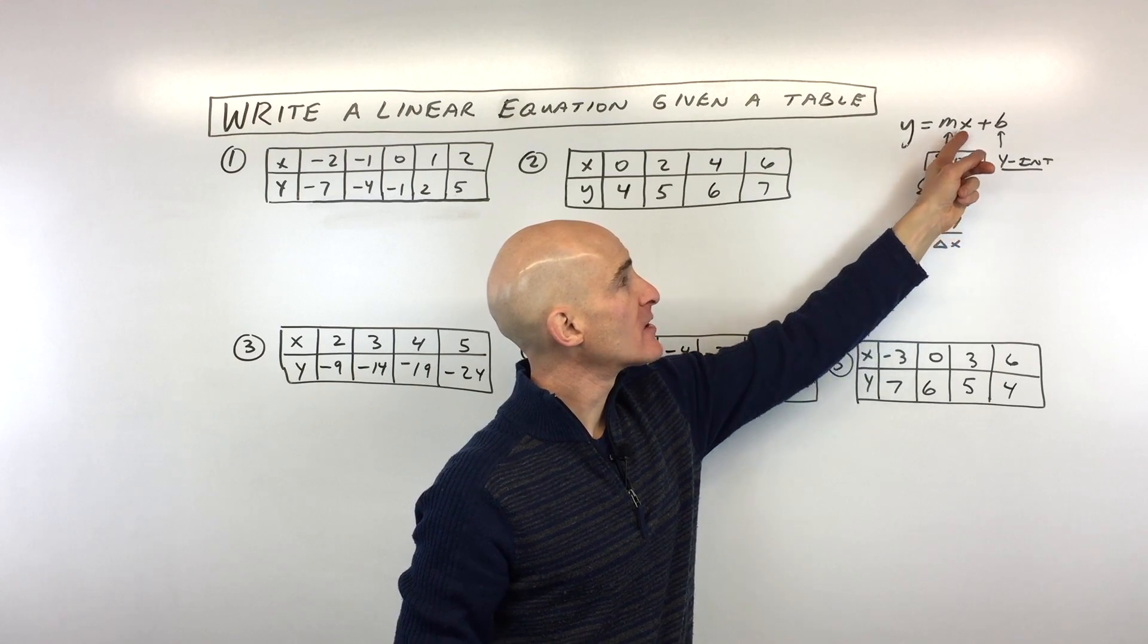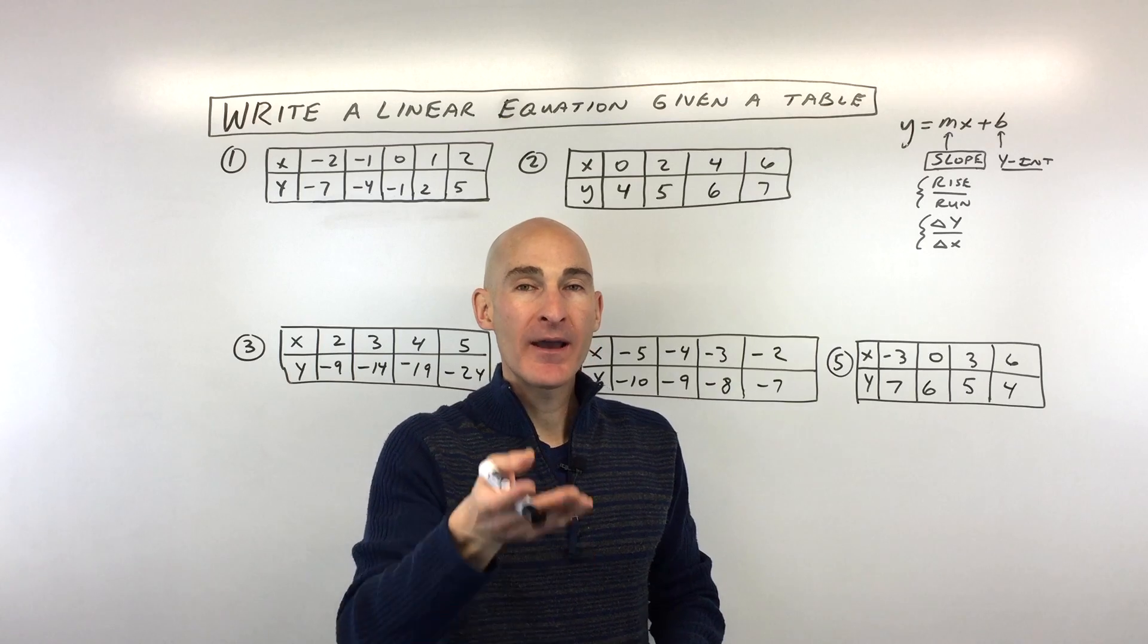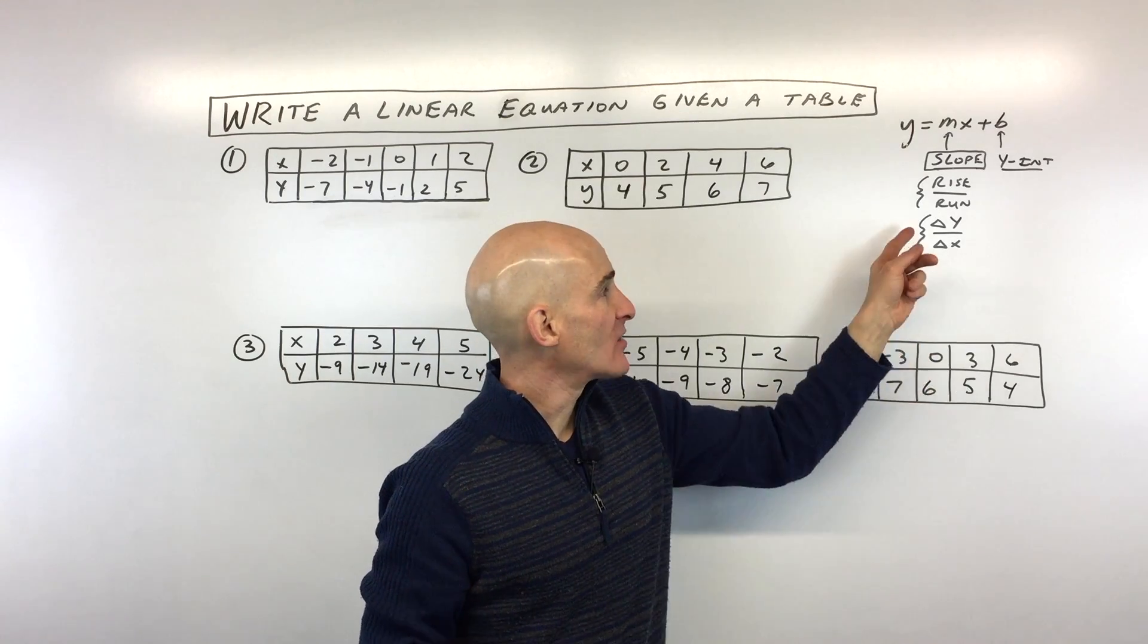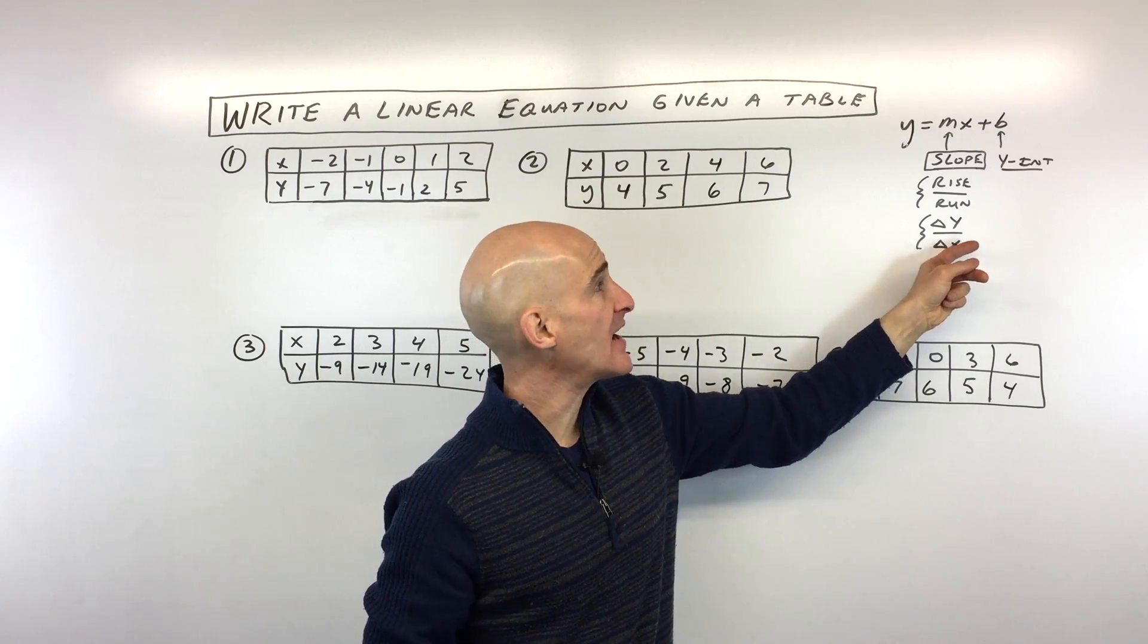Now, remember, the m is the slope, the number that comes in front of the x, and the slope is the rise over run. So it's the change in y over the change in x. That's how I've written it here. Delta y, that means change in y, over delta x, that's change in x.